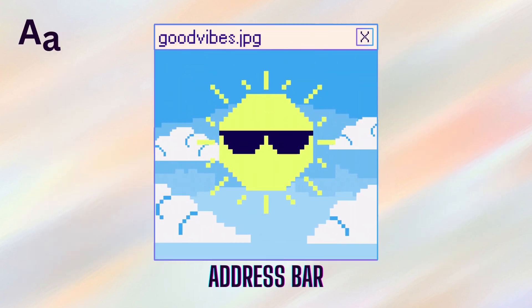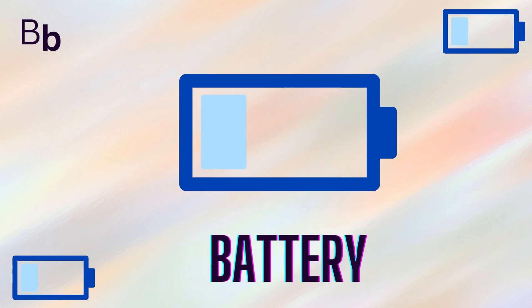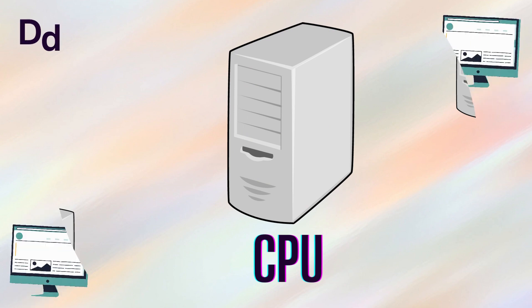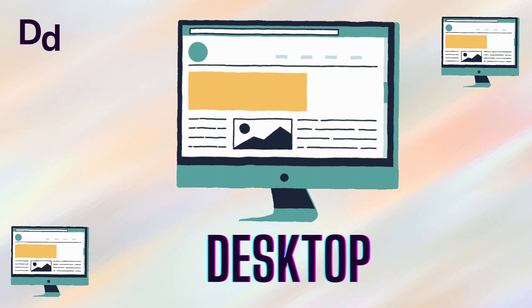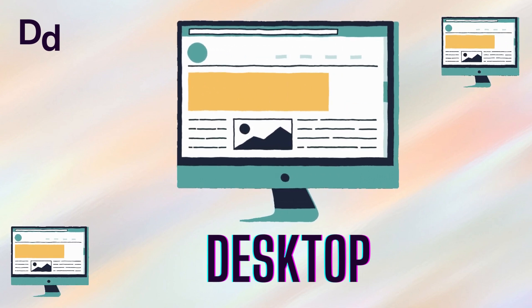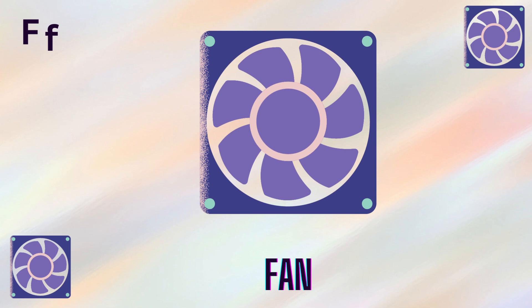A for address bar. B for battery. C for CPU. D for desktop. E for Ethernet cable. F for fan.